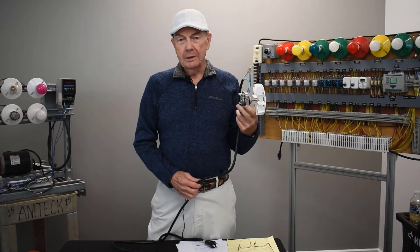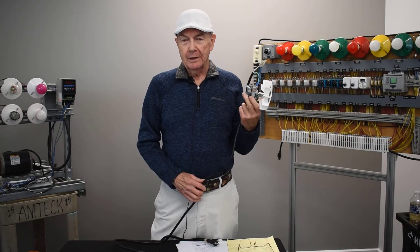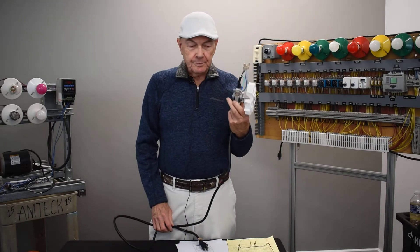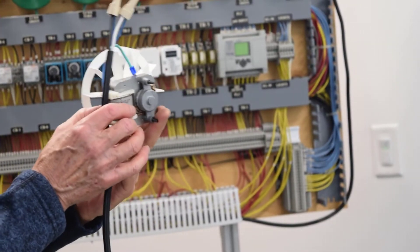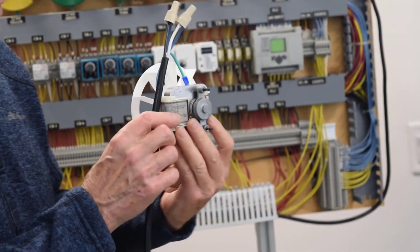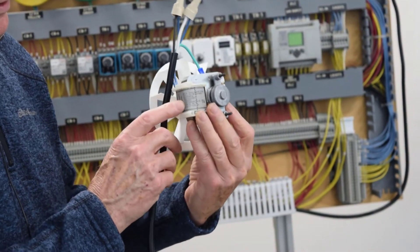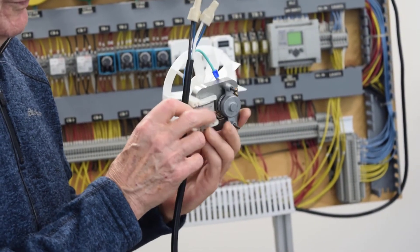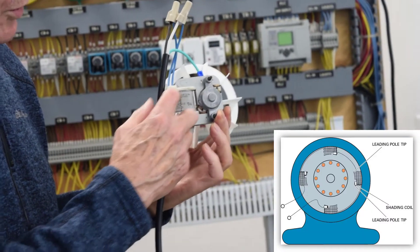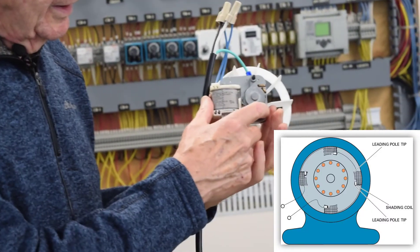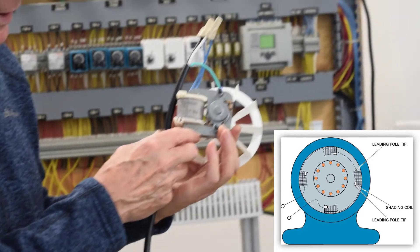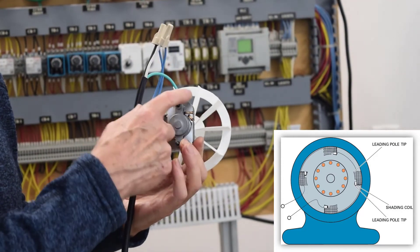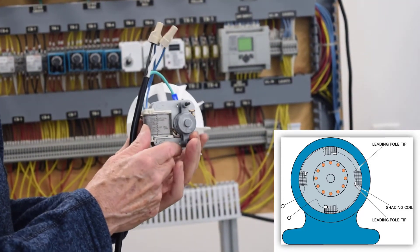So what we need is another means of getting that motor started. So what they come up with, as you can see, we have a field with this coil. This field goes around this pole piece and comes back, and we've got a complete circuit of the field.